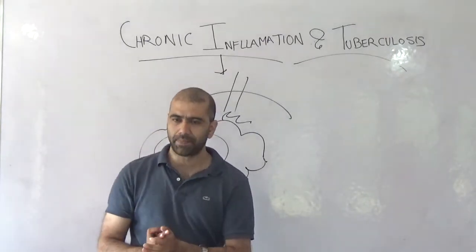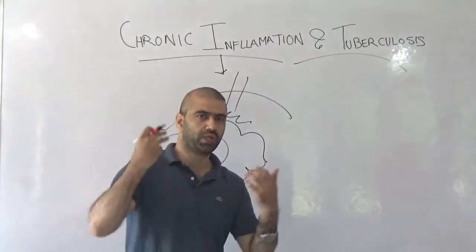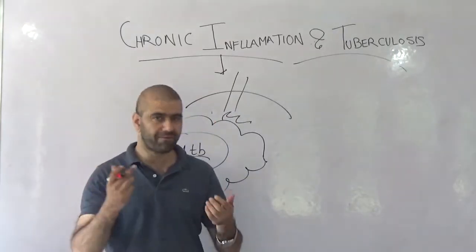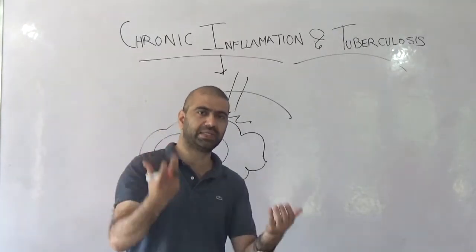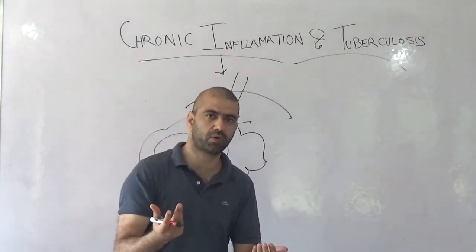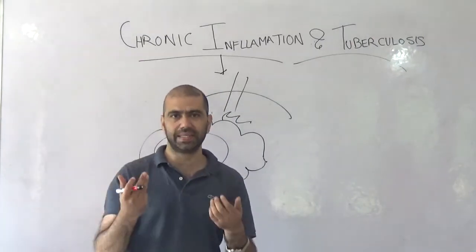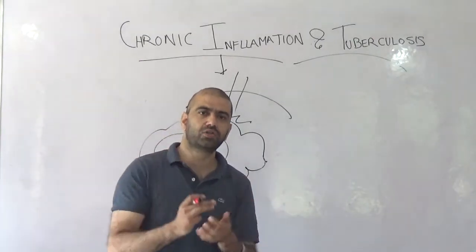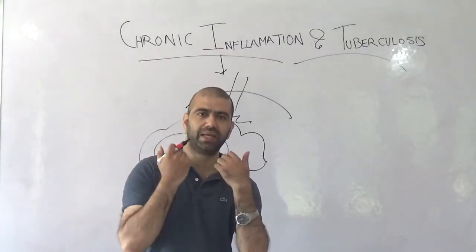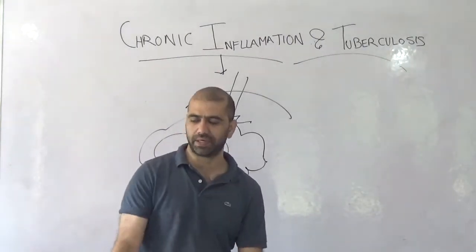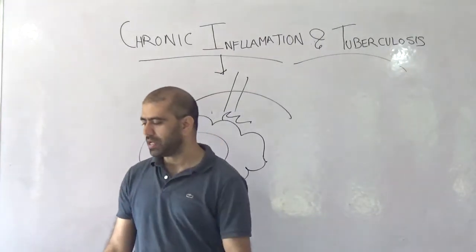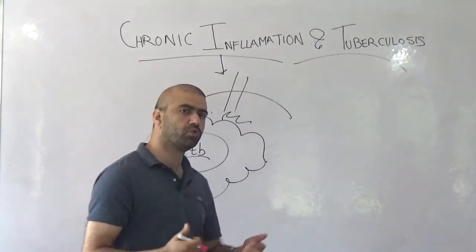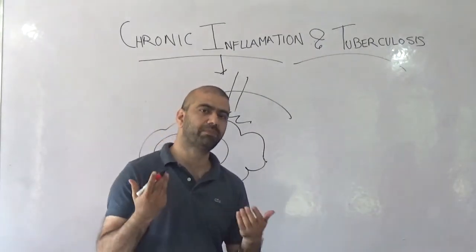The mode of transmission of Mycobacterium tuberculosis is through small droplet nuclei, with a size of around one to two microns. Transmission is through the air. A person who is infected and displays symptoms of tuberculosis, when they sneeze or talk, releases small droplet nuclei which are inhaled and travel down the respiratory tract.